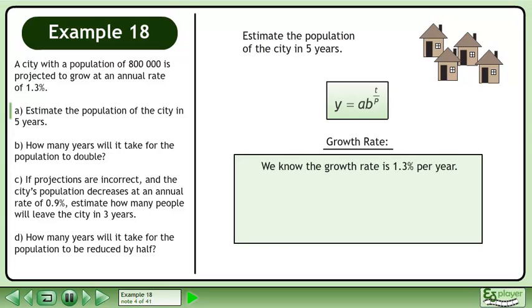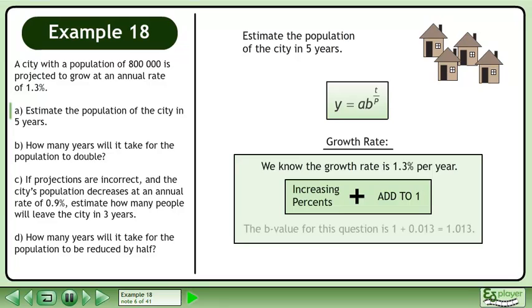We know the growth rate is 1.3% per year. When we have an increasing percent, we add it to 1. The b value for this question is 1 plus 0.013 equals 1.013.